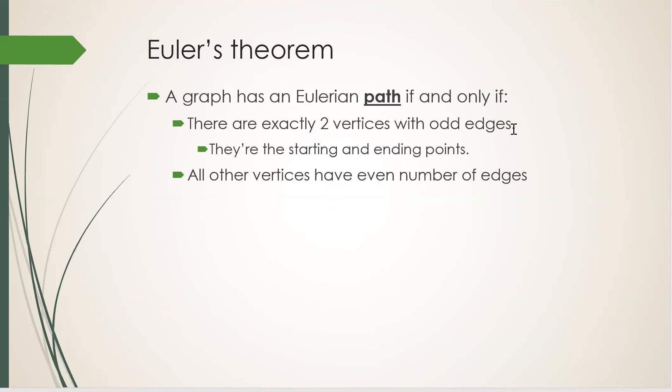That gets us Euler's theorem. A graph has an Eulerian path if and only if, number one, there are exactly two vertices with an odd number of edges. They are the starting and ending points. All the rest of the vertices, they must have an even number of edges.